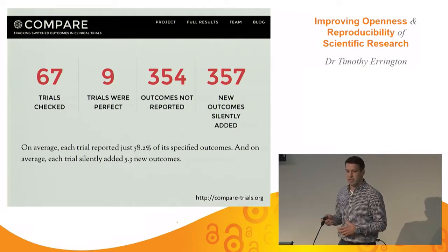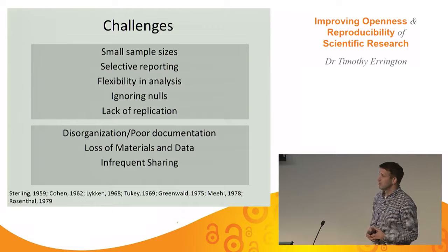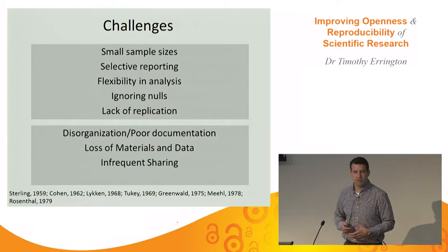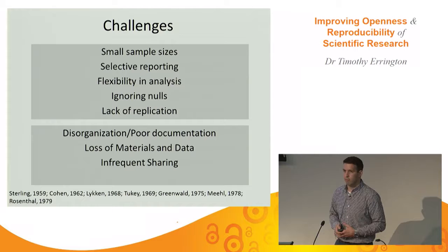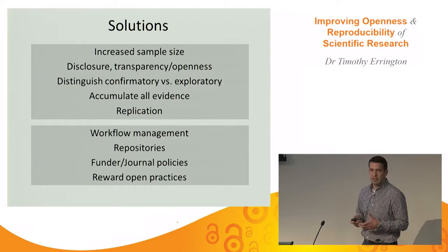A couple more challenges worth discussing: there's poor documentation, limitations on how we communicate materials, data gets lost, and there's not a culture of sharing. A lot of times we'll ask for plasmids — something for which there are open repositories — and authors aren't sharing them with us, and they're not openly available. That's a low-hanging-fruit barrier. It's an easy way to communicate and share materials with another investigator who wants to replicate or build on that work.